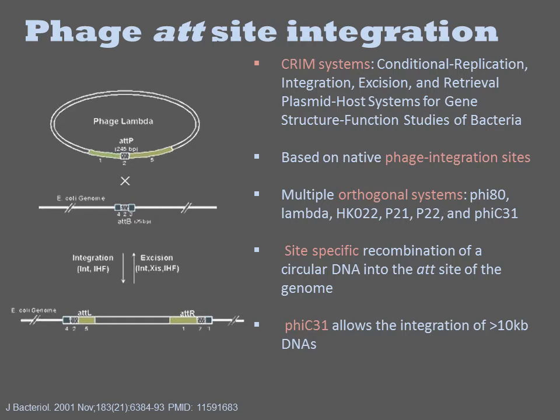Most of these systems only work on DNAs up to around 10 KB. Phi-C31 is distinctive in that it allows the integration of DNAs larger than 10 KB. Thus, in more advanced uses of phage outside integration, such as its use in mammalian cells, Phi-C31 is usually employed.